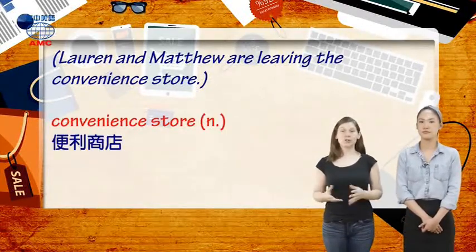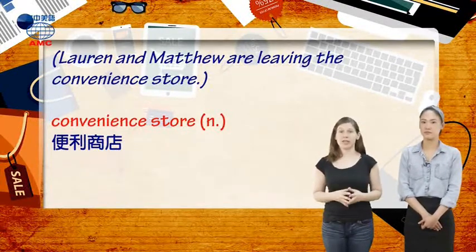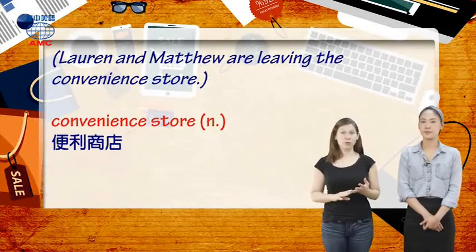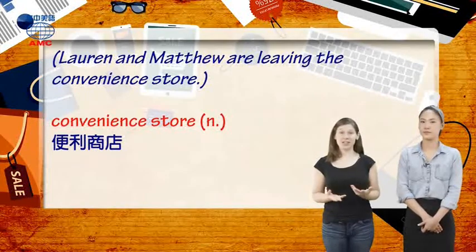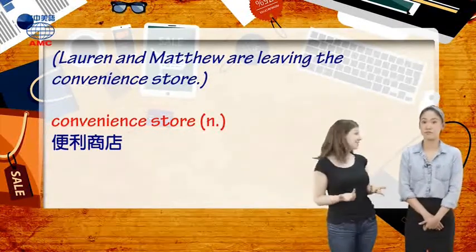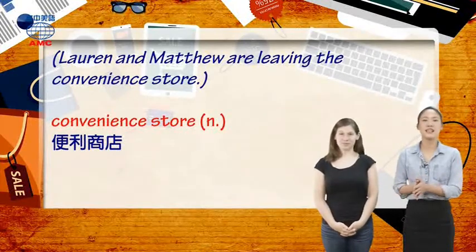Now, of course, a convenience store is a store you can go in and buy things really quickly that you might need. It's a cheap and fast place to get food, drinks, and other things that you might need at that moment. For example, Family Mart, OK Mart, and 7-Eleven. Yeah, convenience store就是便利商店.